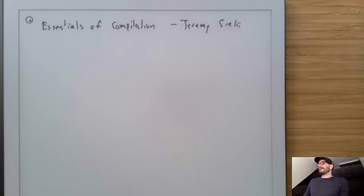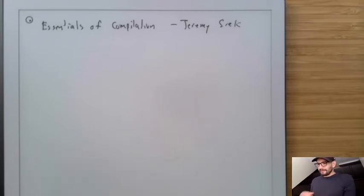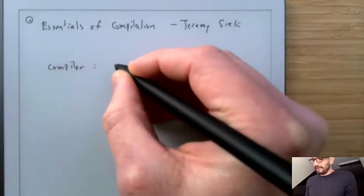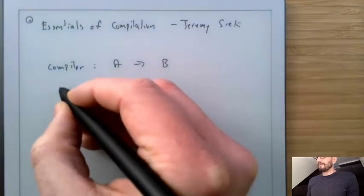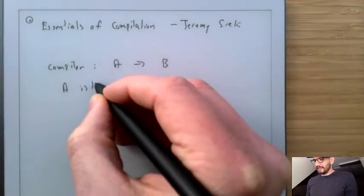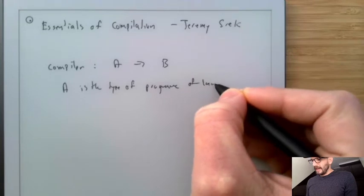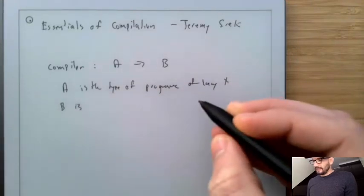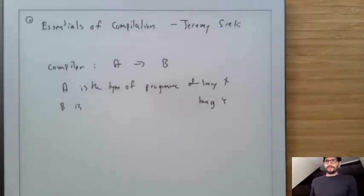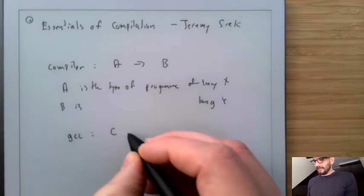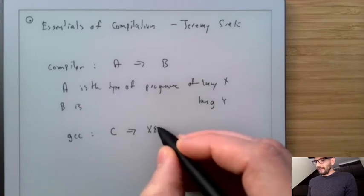With that background out of the way, let's jump in. The goal of this class is to write a compiler. So what is a compiler? At a very basic level, a compiler is actually a really simple function — it's a function that goes from some data type A to another data type B, where A is the type of programs of language X and B is the type of programs of language Y.